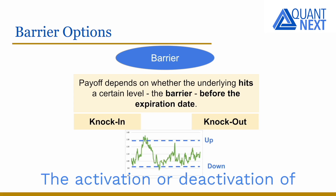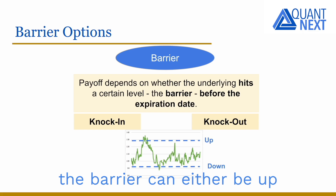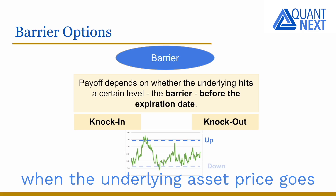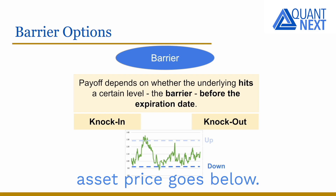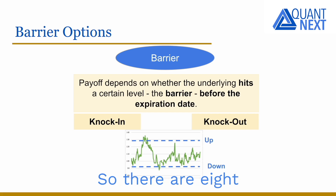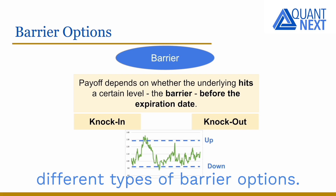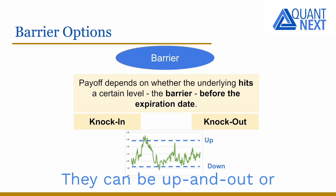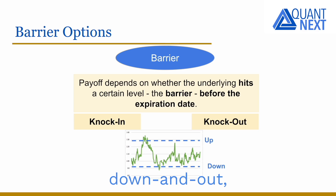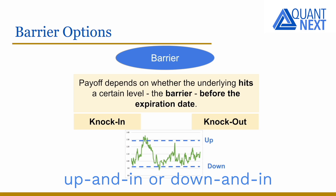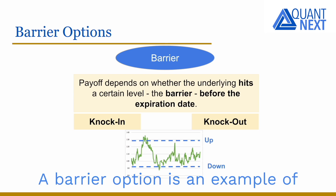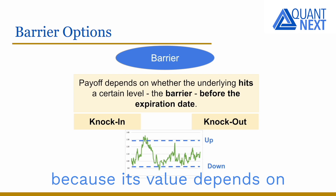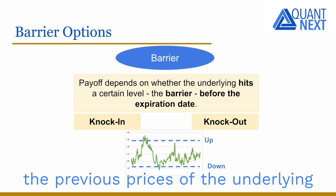The activation or deactivation of the barrier can either be up, when the underlying asset price goes above the threshold, or down, when the underlying asset price goes below, depending on the option. So there are eight different types of barrier options: up and out, down and out, up and in, or down and in calls or puts. A barrier option is an example of a path-dependent option because its value depends on the previous prices of the underlying.